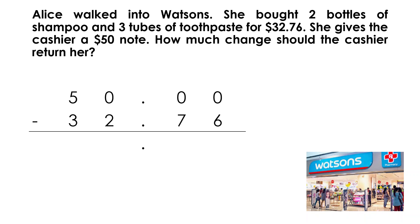Therefore, we need to borrow from the $5.10 by putting a slash. Now, we write 4 as the remaining $10 value and one $10 is carried forward to the dollar position. Next, we need to borrow from the dollar position by putting a slash. Now, we write 9 as the remaining dollar value and one dollar is carried forward to the $0.10 position.